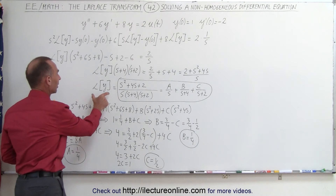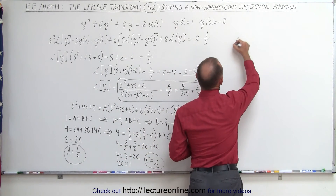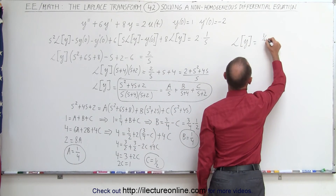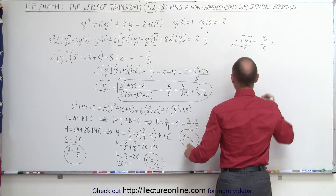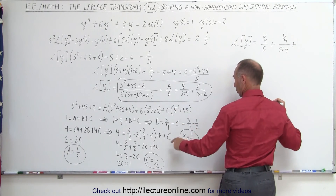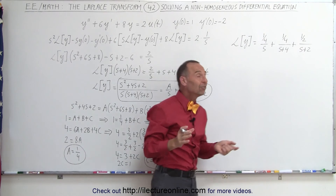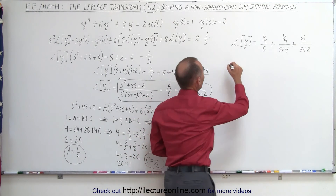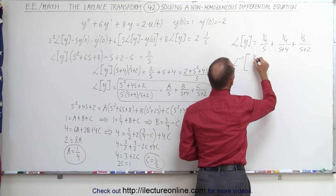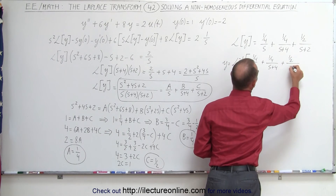Now that we know A, B, and C, the Laplace transform of y can be written as one quarter over s, plus one quarter over s plus four, plus one half over s plus two. It's fairly straightforward to find the inverse Laplace transform of each of these terms.